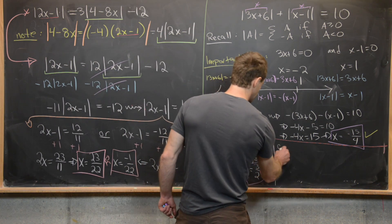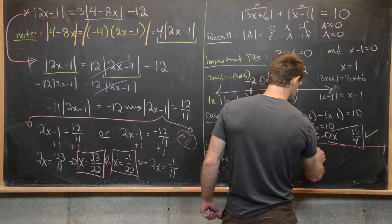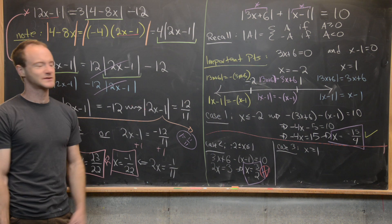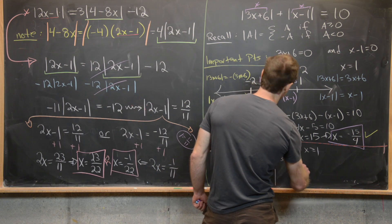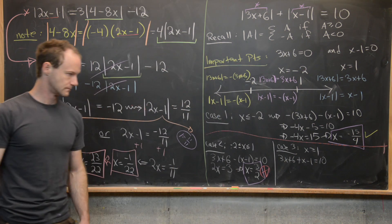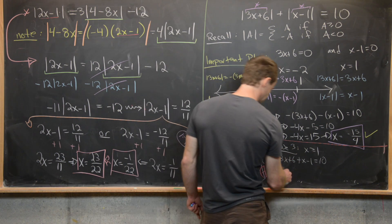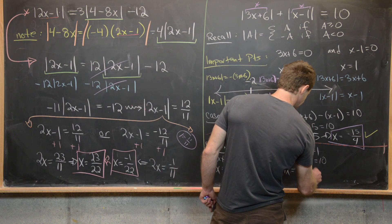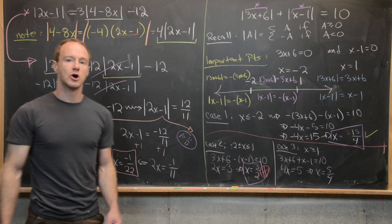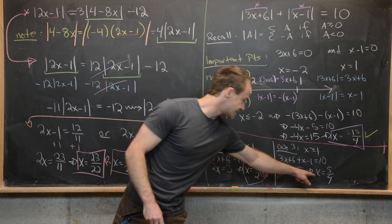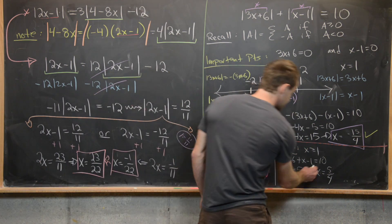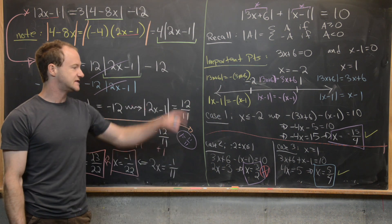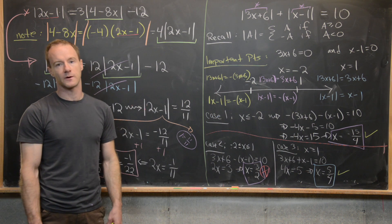Case 3: x is greater than or equal to 1. In this region the interior of each absolute value is positive, so we can delete the absolute values: 3x plus 6 plus x minus 1 equals 10. Simplifying gives 4x plus 5 equals 10, so 4x equals 5 and x equals 5 over 4. We check: 5 over 4 is bigger than 1, so it is in the correct region and is a valid solution. The two solutions are x equals negative 15 over 4 and x equals 5 over 4.